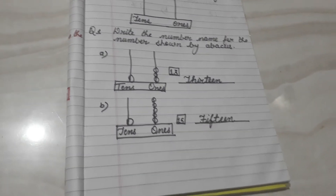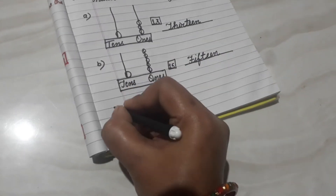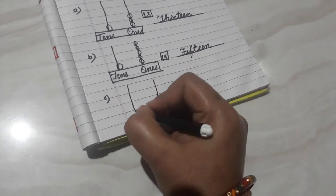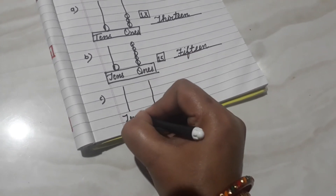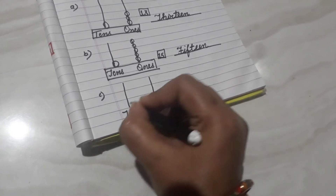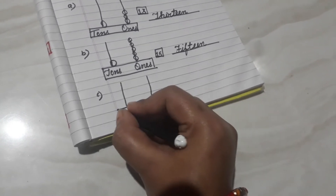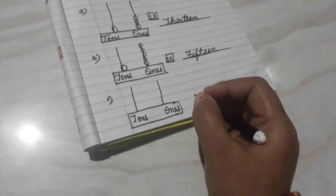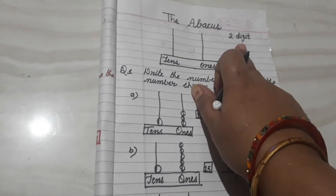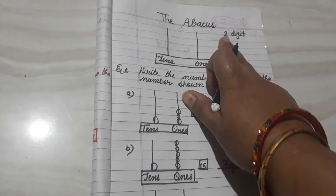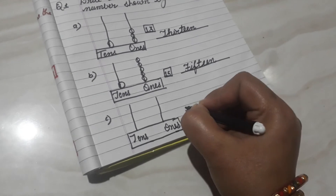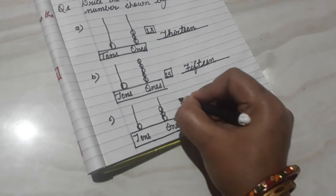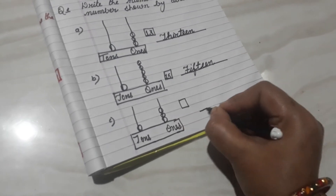Students, what you have to do? Just make an abacus in your rough notebook for practice. I am making an abacus and you will make one too with me and solve it. I have written here tens and ones. How many rods do we have to draw? Two rods, because in class first we are studying about two-digit numbers.